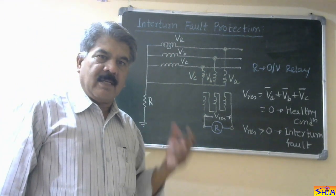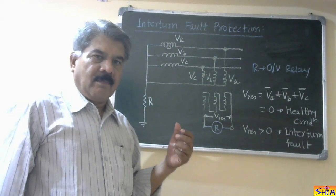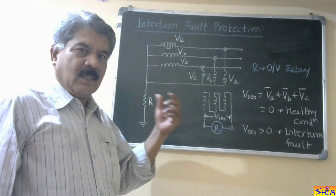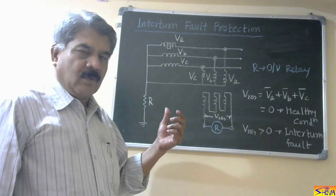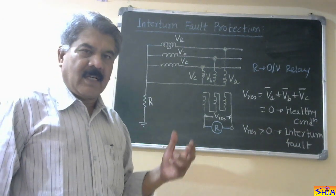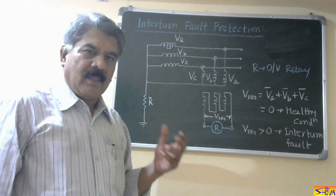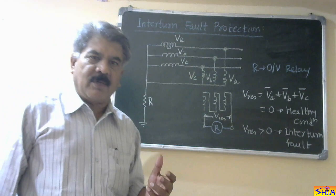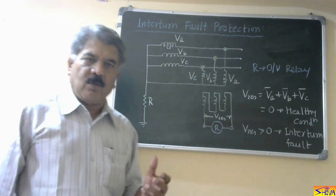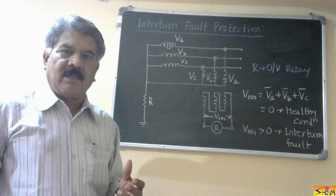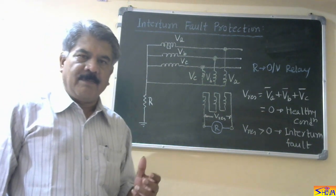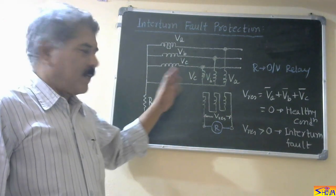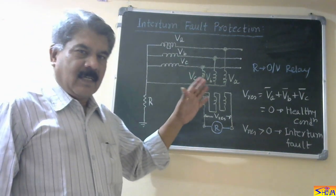There is no current difference in the CTs on both sides of the winding, so the differential current is zero. Therefore, the percentage differential relay — that is Merz-Price protection, also called longitudinal differential protection — is not able to provide protection against inter-turn faults.